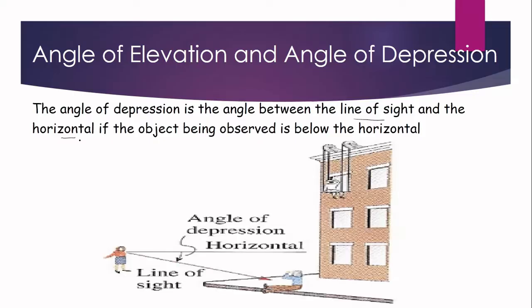Consider this figure. This is your horizontal. The line of sight goes downward because the object being observed is below the eye of the observer. The angle formed here is what we call the angle of depression.